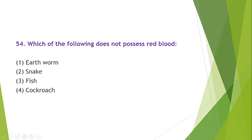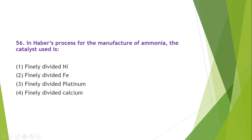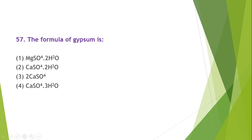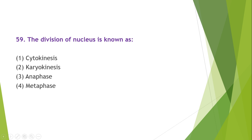Brunner's glands are situated in the duodenum. The cockroach does not possess red blood. The fish does not possess a 4-chambered heart. In Haber's process for the manufacture of ammonia, the catalyst used is finely divided iron. The formula of gypsum is CaSO₄·2H₂O. The IUPAC name of the compound CH₂=CH₂ is ethene. The division of nucleus is known as karyokinesis.